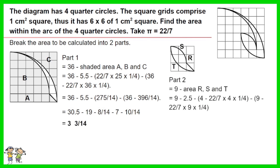Part 2 equals 9 minus area R, S and T. Work out the equation, you have 3 and 10 over 14.